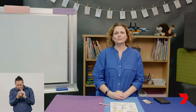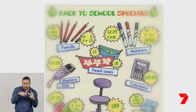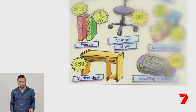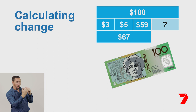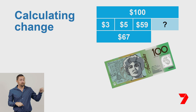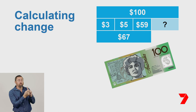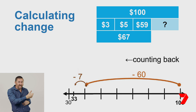When calculating change, we can choose to use any method that suits us. This time we're going to buy more than one item. What if I buy the small pencil case, the large pencil case and the student desk from a $100 note? The whole is $100 and there are four parts this time: one pencil case is $3, the other is $5, and the desk is $59. The change will be the other part. Altogether we are spending $67. So I start at $100 and count back $60, then count back $7. I end up at $33, so my change is $33.